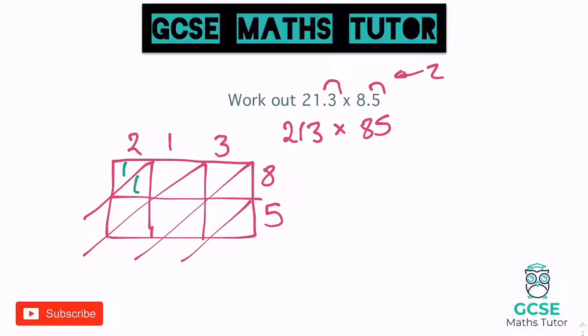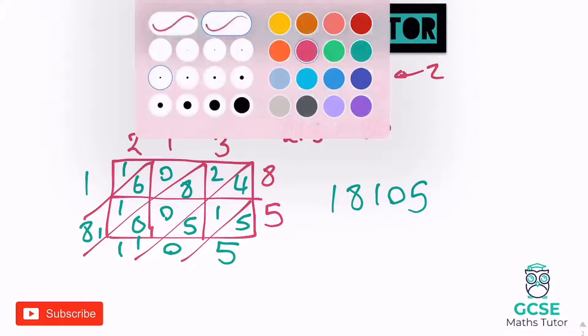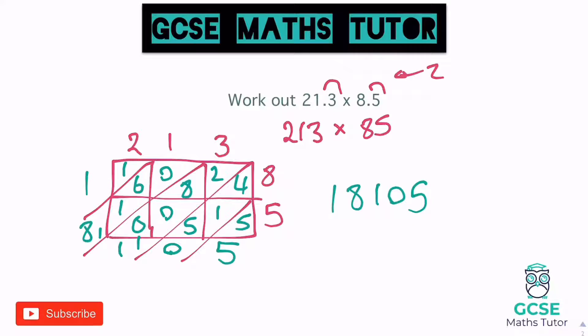So 2 times 8 is 16. 1 times 8 is 8. 3 times 8 is 24. On to the bottom. 2 times 5 is 10. 1 times 5 is 5. And 3 times 5 is 15. And adding these up from right to left. So 5. We've got 10 there. So carry the 1. 10 plus the 1 is 11. 178. And 1 there. Right, so we've got 18105. So 18105. And then we've got to put two hops back in, two place values there back in. So 1, 2 gets us 181.05.